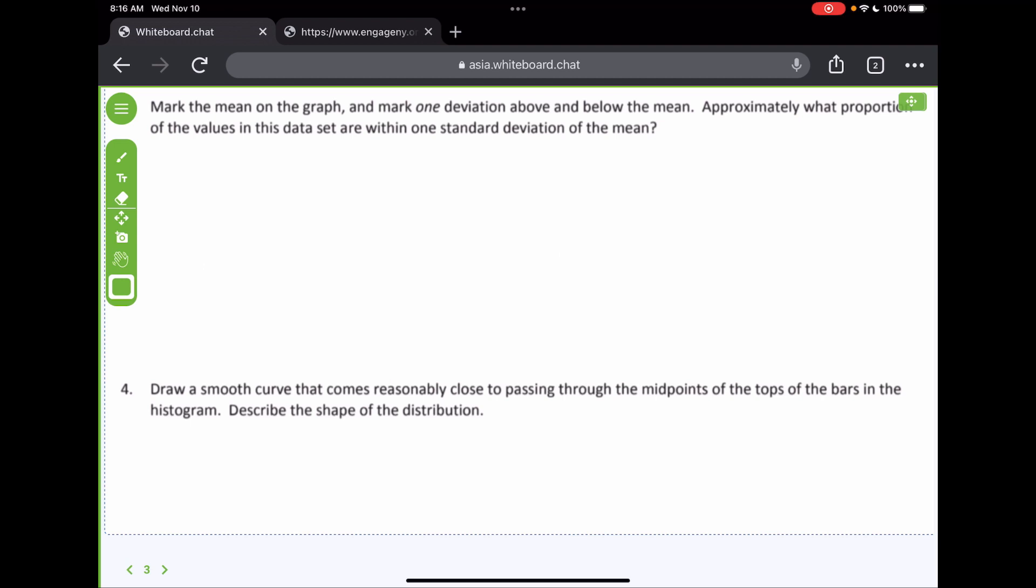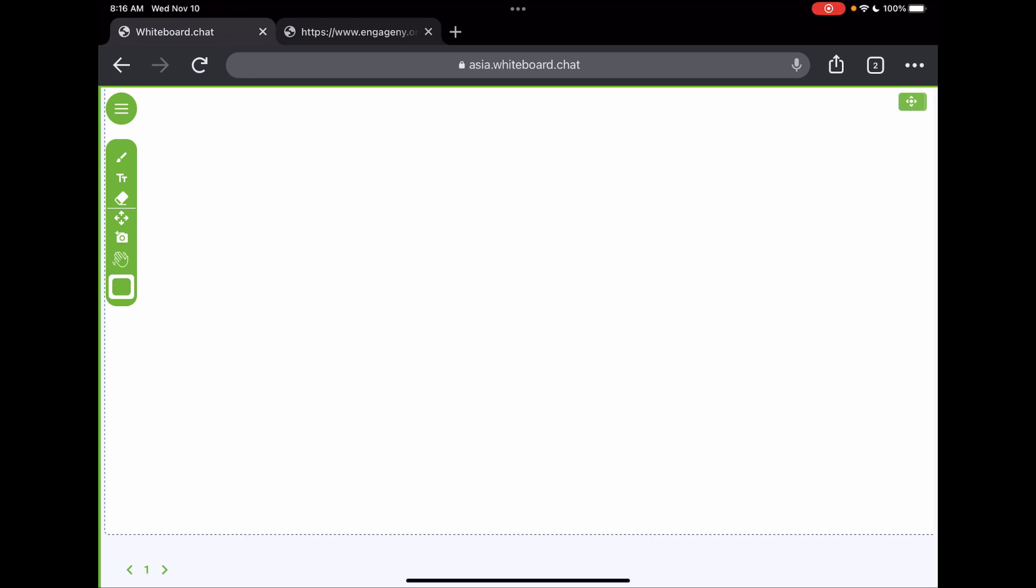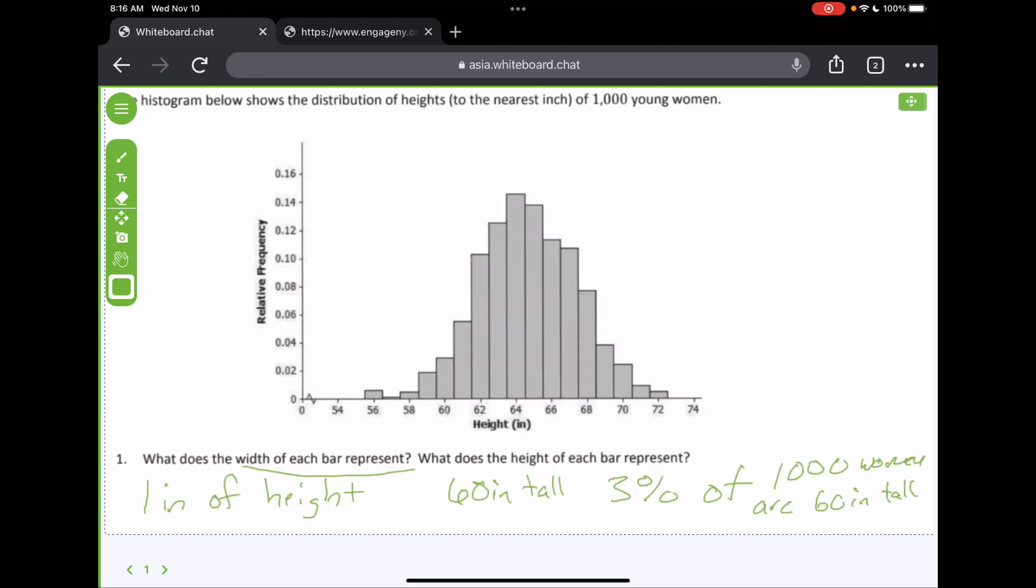It says, mark the mean on the graph and mark one deviation above and below the mean. It's going to mean approximately what portion of the values in this data set are within one standard deviation. So, that's exactly what we're talking about. So, let's go back to page 1, where we have our chart. And it says to mark the mean, which was 64.6, correct? So, if we mark the mean, it's going to look something like this. Here's the mean.